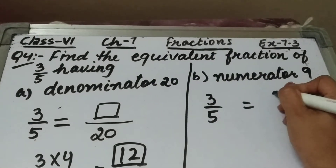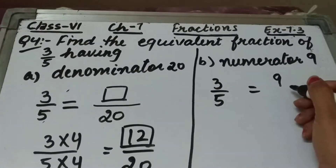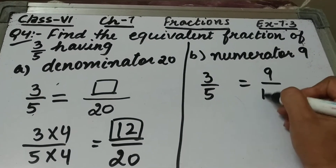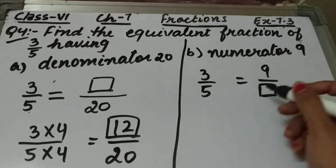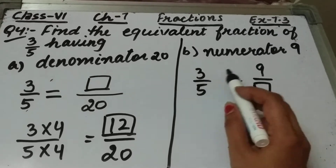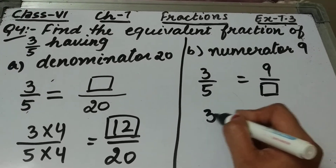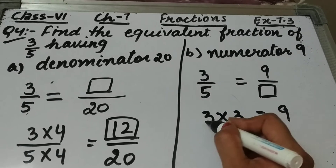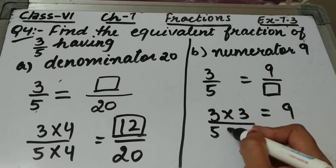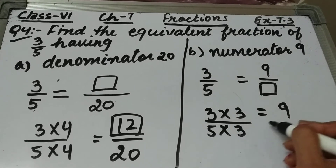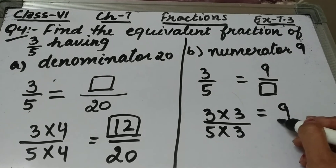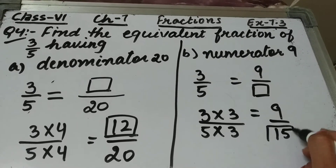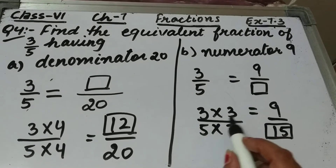Part b is: find the equivalent fraction of 3 by 5 having numerator 9. We have to find the denominator. By which number should I multiply 3 to get 9? If I multiply 3 by 3, I will get 9. And I will multiply 5 also by 3, because both these fractions are equivalent fractions.